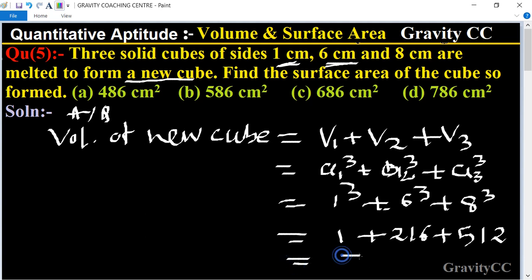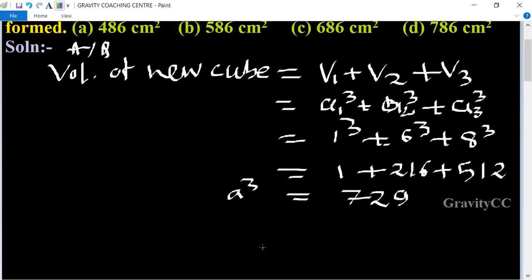Volume of new cube equals a³. a³ = 729, so a = 9 centimeters.